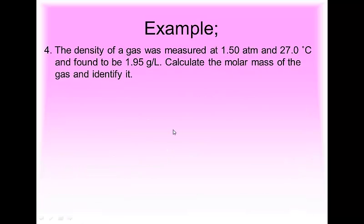Density of a gas is measured at 1.5 atmosphere, 27 degrees Celsius, found to be 1.95 grams per liter. Density given. Calculate molar mass and identify it.